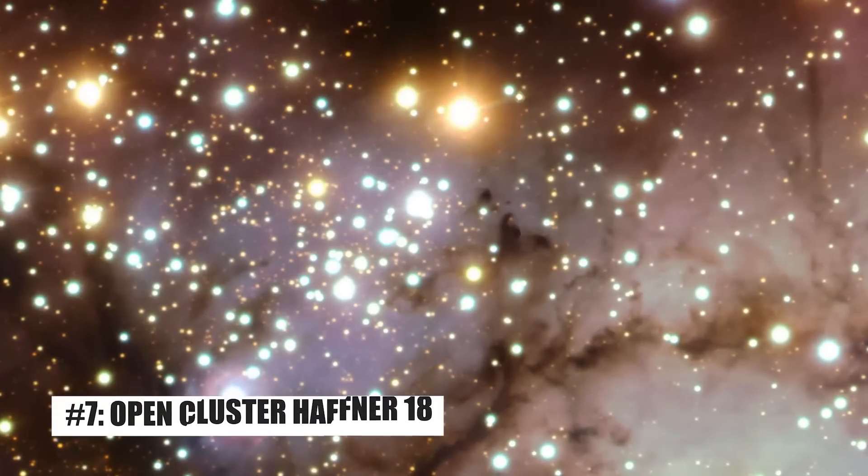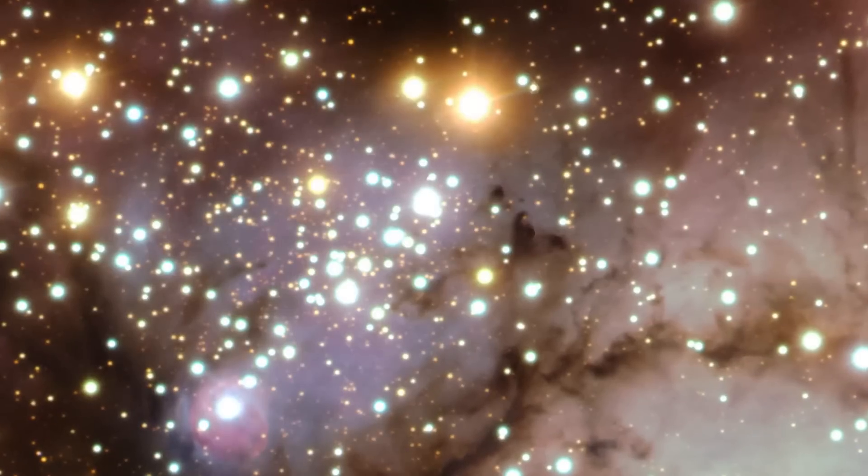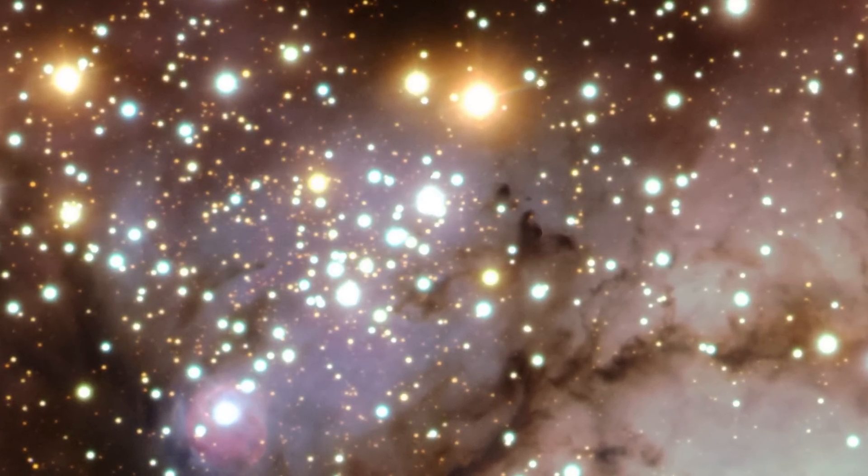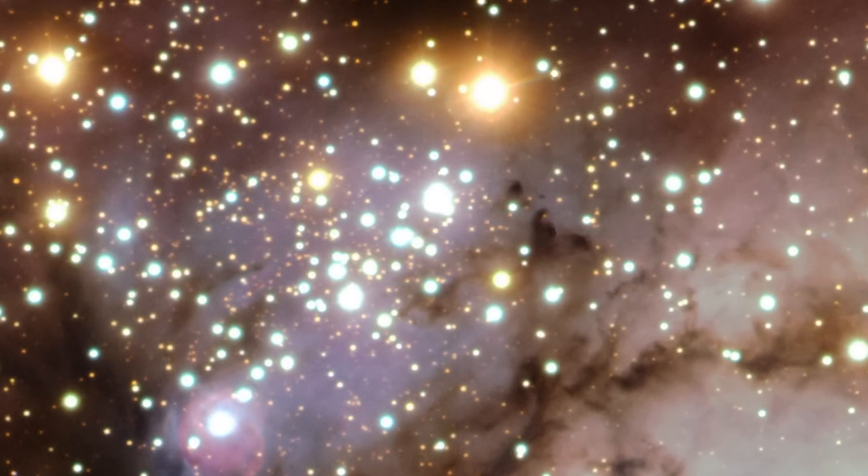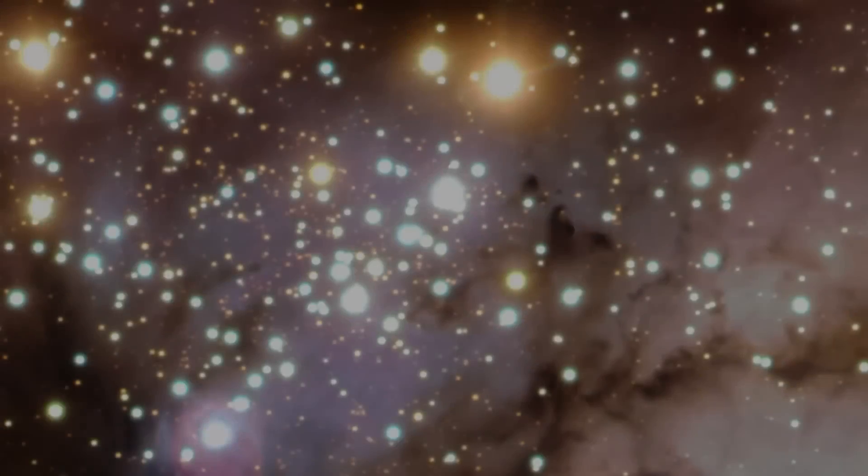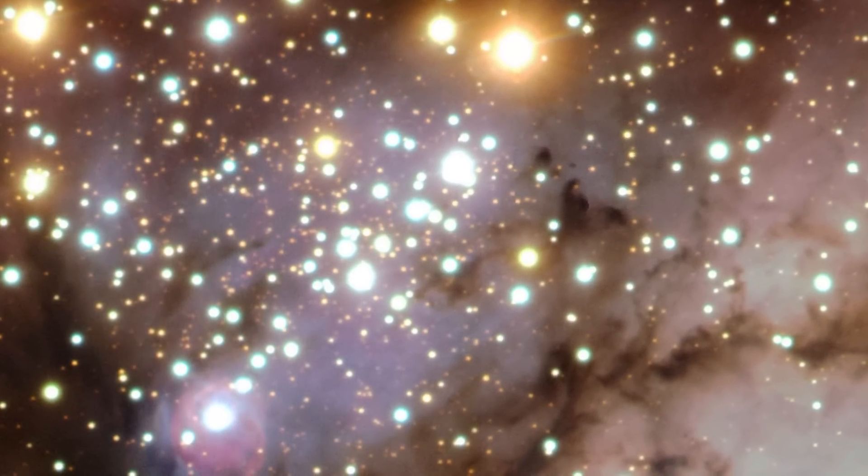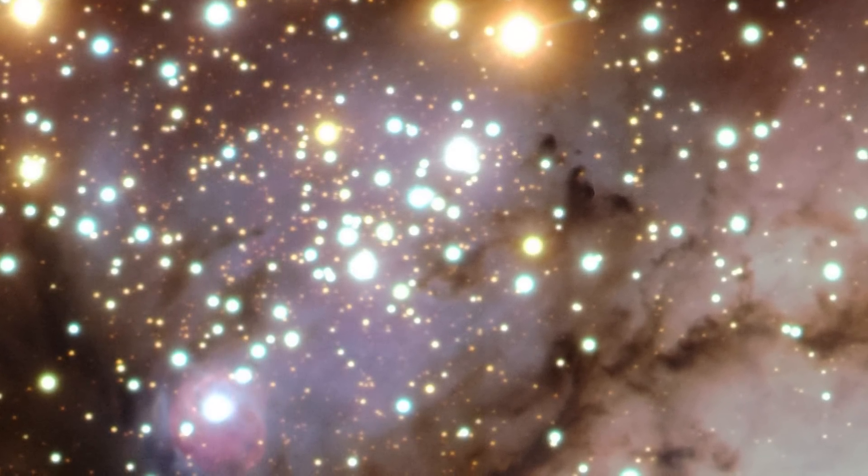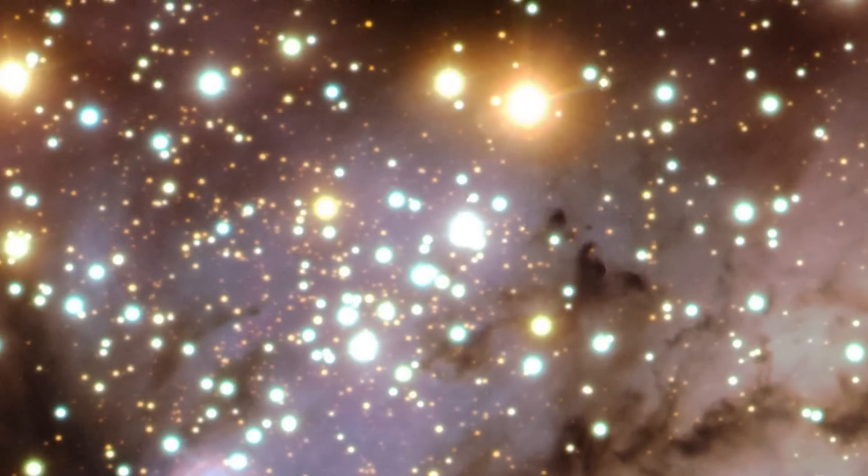Number 7. Open Cluster Hafner 18. A mature group of stars that have already dispersed into their birth nebulae represent the end result, or recent past, of a star formation process in the center region of the image, Hafner 18. In the cluster's bottom left corner, a newborn star can be seen breaking free from its nascent cocoon of gas, providing insight into the ongoing star formation process. Last but not least, the active star nurseries may be seen out to the right.